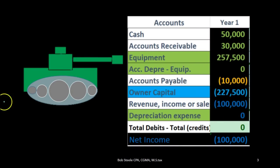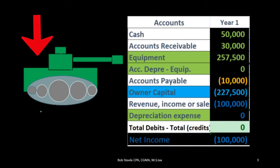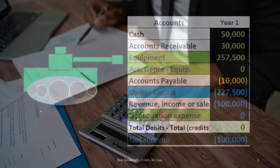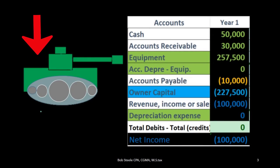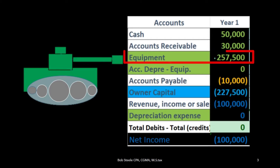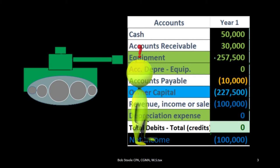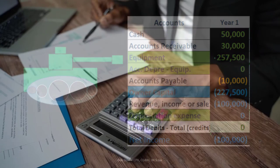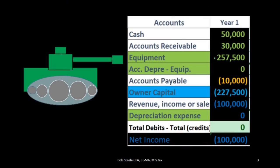Let's take a look at an example. In this example, we have a tank, which is property, plant, and equipment. It's going to help us generate revenue in some way in the future. Therefore, we're going to put it on the books as an asset — a fixed asset, a depreciable asset — that we will then depreciate over time according to its useful life.